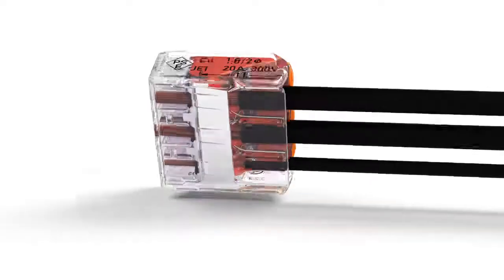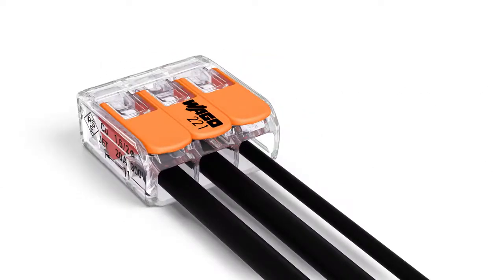A gas-tight contact point provides a durable and secure connection between conductor and current bar. The completely closed housing covers all live parts or conductors, providing a high level of protection against accidental contact.